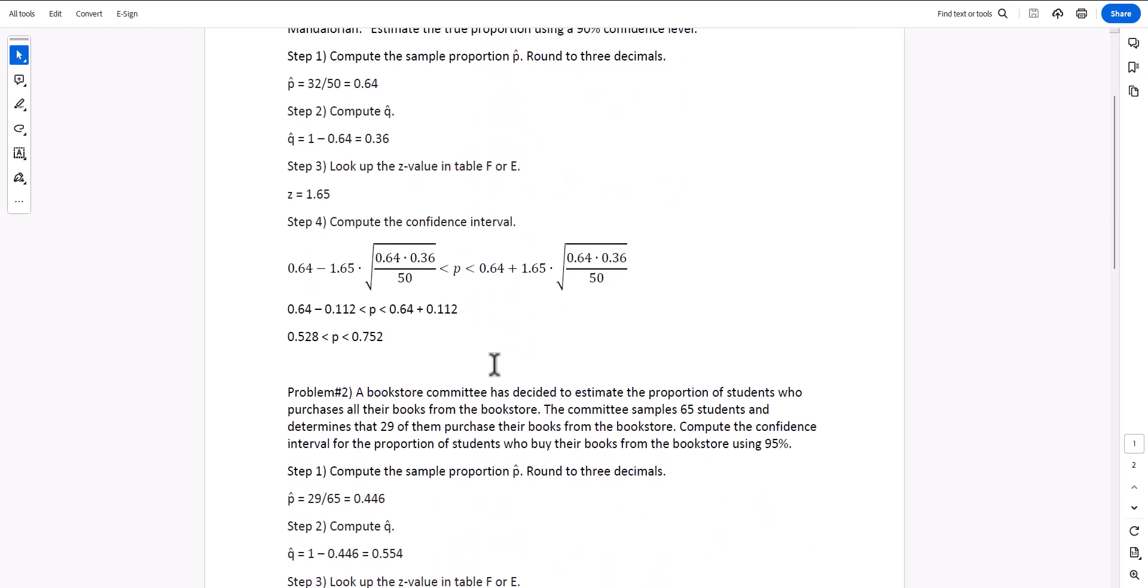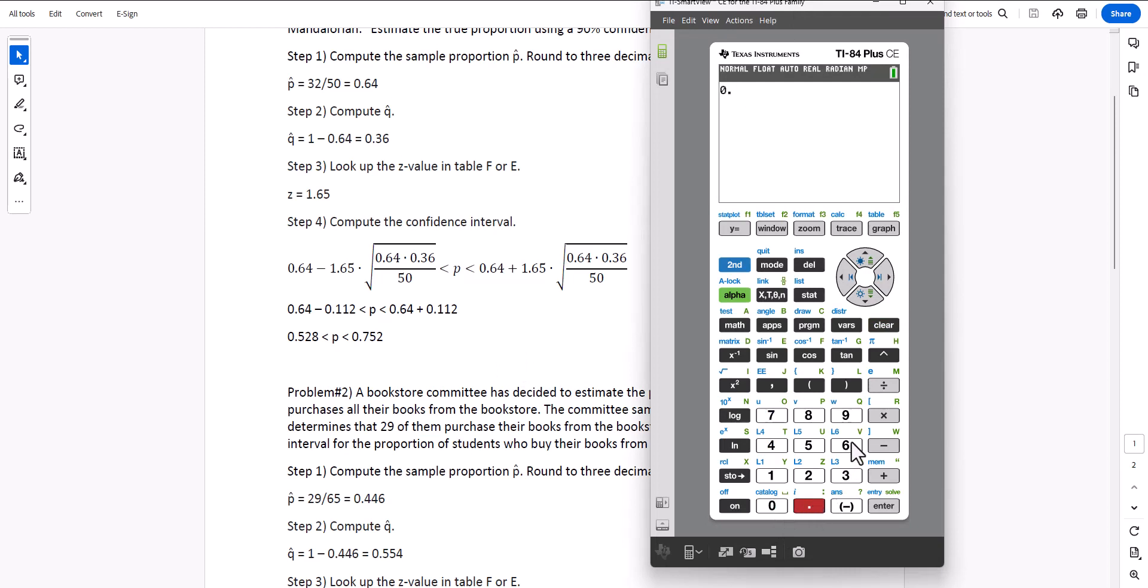And now we're ready to type this information into our calculator. So we type 0.64 minus 1.65 times the square root. I'll use parentheses to keep everything inside the square root: 0.64 times 0.36 divided by 50. Hit enter, round to 0.528.